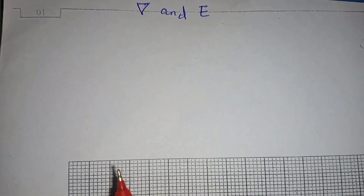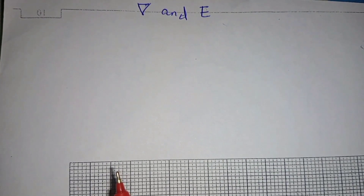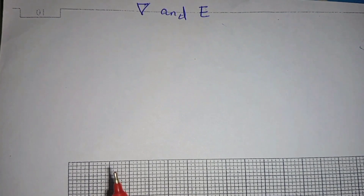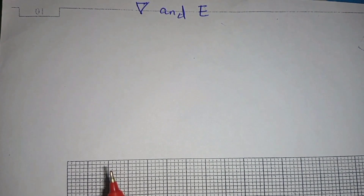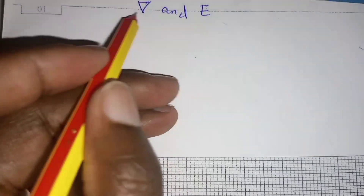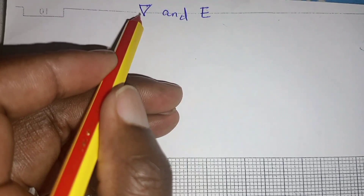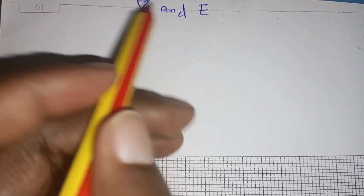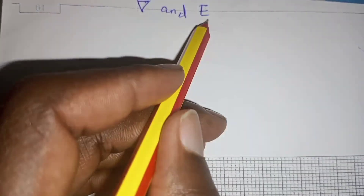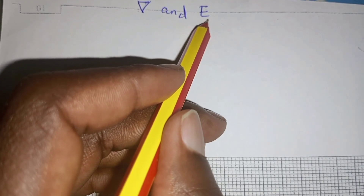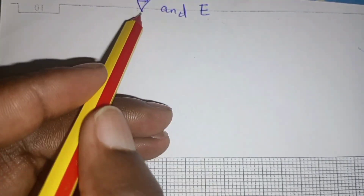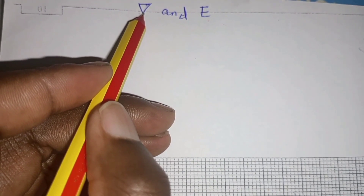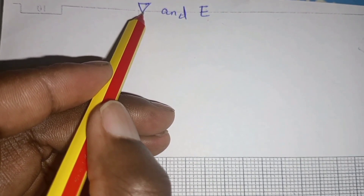Welcome to the standard of mathematics. We are considering the relationship between the backward difference operator, which is represented by the symbol nabla (the inverted triangle), and the shift operator E. E stands for the shift operator, nabla stands for the backward difference operator. How are they related?